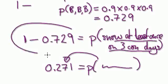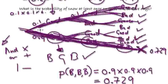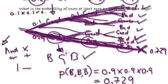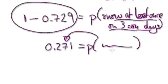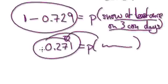So try and do this - rather than adding up all these branches, you know all the branches added together equal one, so just get one, take away this branch here: bad, bad, bad. The answer is 0.271.